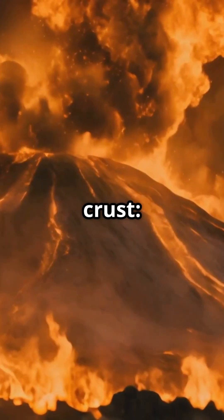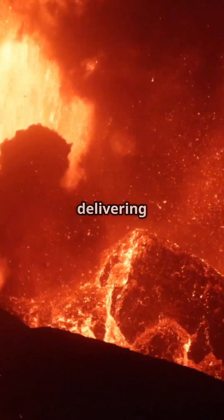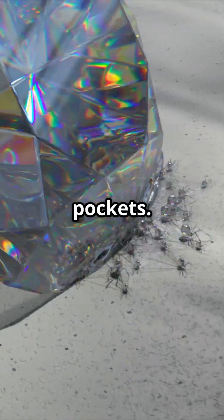Subducted oceanic crust: ocean plates rich in carbon subduct beneath continental plates, delivering carbon into the mantle. Primordial carbon: some carbon has been trapped in the Earth's mantle since its formation, stored in isolated pockets.